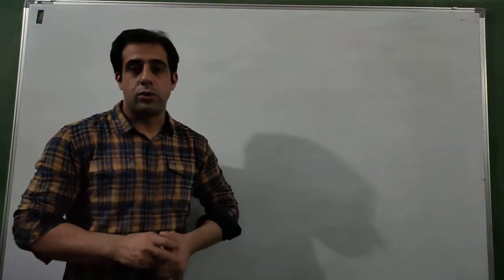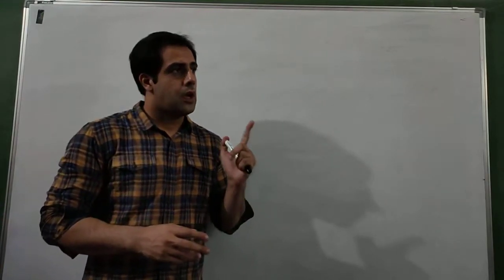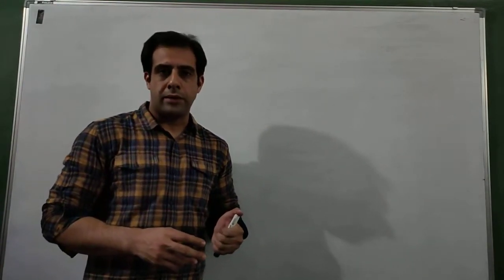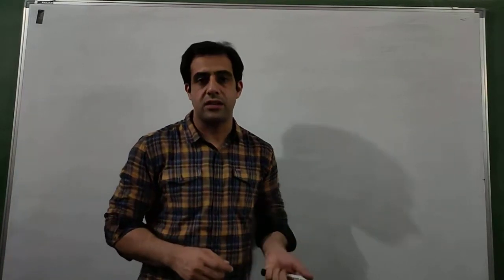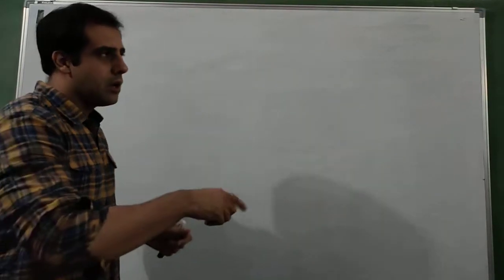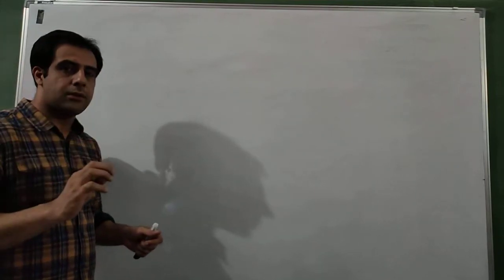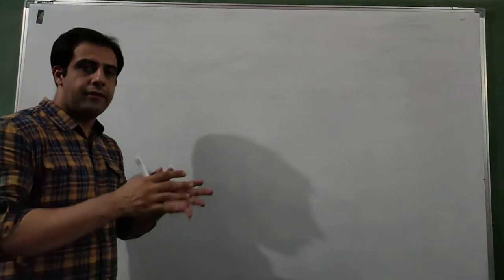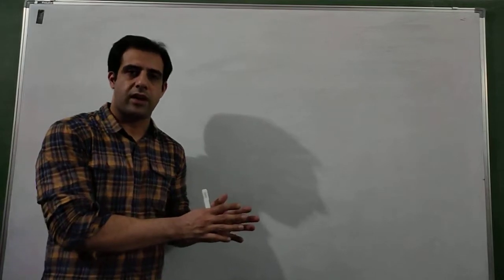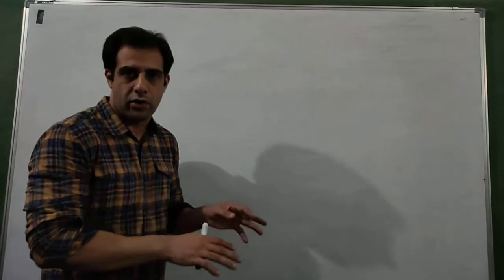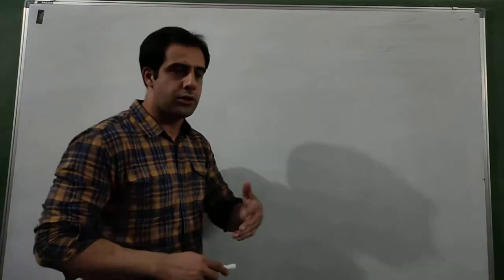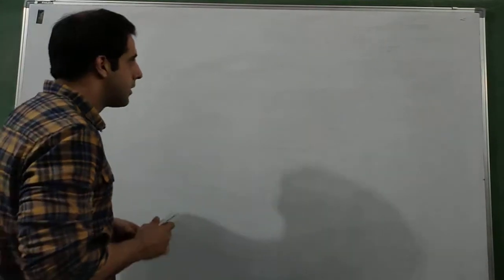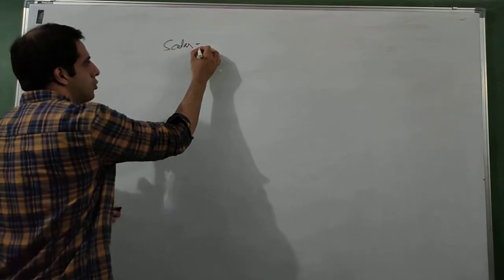In the last video we started with motion in a straight line and did some formulas on speed, velocity, average speed, average velocity, instantaneous speed, and instantaneous velocity. Today in this video we are going to discuss vector and scalar quantities. We will study only that much of vector quantity which is required right now for this chapter; later aspects will come in another video.